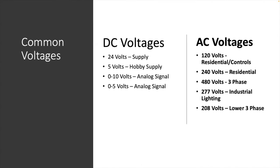Some of the common DC voltages that we will see in industry are 24 volts, which is generally the motor controls supply. 5 volts, which I put as a hobby supply because things like Arduino run off 5 volts. There's also a 0 to 10 volt analog signal and a 0 to 5 volt analog signal. And there's another form of 24 volts that is actually a current signal called 4 to 20 milliamps, but it runs on 24 volts.